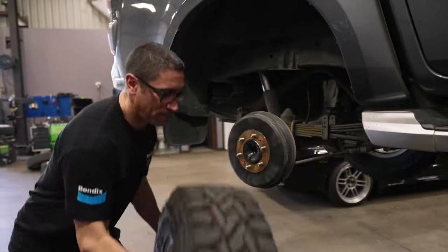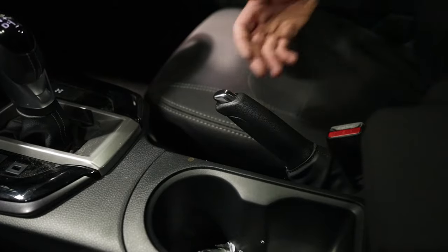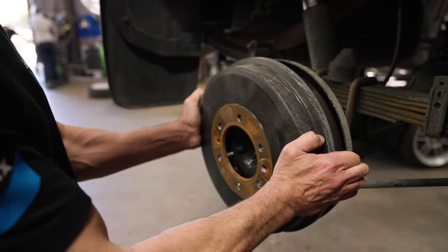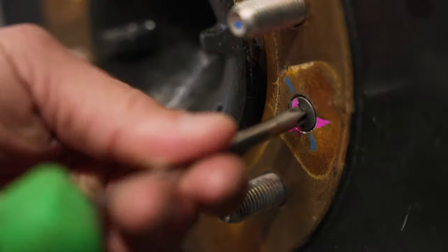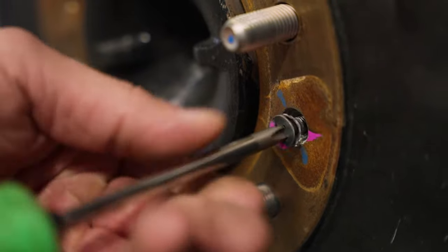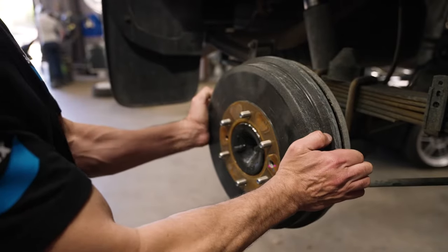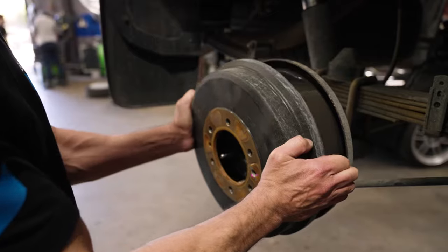Once the vehicle is up in the air and the rear wheels are off, make sure the handbrake is disengaged and remove the brake drums like so. Depending on how the rear brake drum setup works on your vehicle, you may need to remove a retaining clip or undo a couple of Phillips head retaining screws.